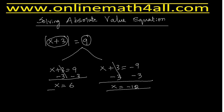Finally, we are getting two values for x. The solution is x equals 6 and x equals negative 12. Now we can discuss why we take the opposite sign in the second branch — why we take the opposite sign for the given number. We will discuss this on the next page.